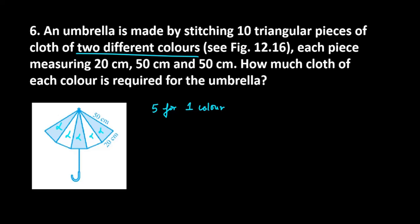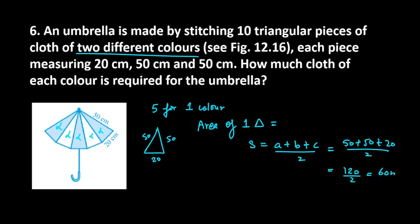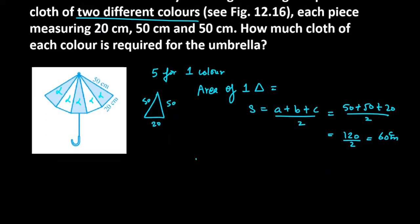If you want to make blue color, first of all you want to find the area for the first triangle. So what are your sides of triangle? 50, 50 and 20. We want to find the area of one triangle and then multiply by 5. Area of one triangle will be equal to S. S will be equal to A plus B plus C divided by 2. Adding all the sides, 50 plus 50 plus 20 divided by 2. So you have 120 divided by 2 which will give you 60 cm.